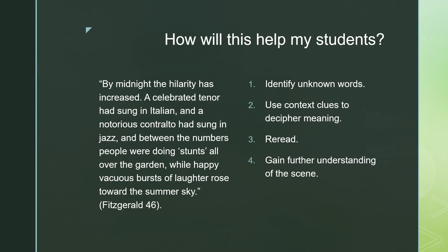So how is this going to help my students? I chose an excerpt from The Great Gatsby: 'By midnight, the hilarity has increased. A celebrated tenor had sung in Italian, and a notorious contralto had sung in jazz. And between the numbers, people were doing stunts all over the garden, while happy, vacuous bursts of laughter rose towards the summer sky.' First, students will identify unknown words — they are probably going to identify vacuous. Then they will use context clues to decipher the meaning, re-read, and gain further understanding of this scene and what this word means. The graphic organizer will help them by giving them the steps in order of what they need to do.